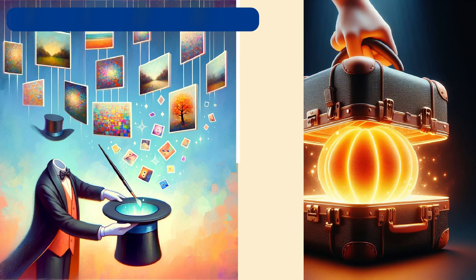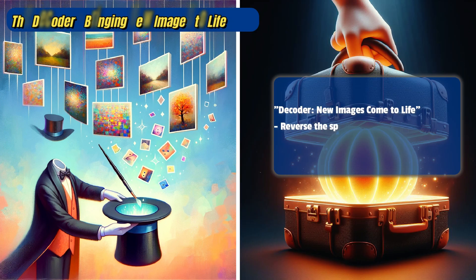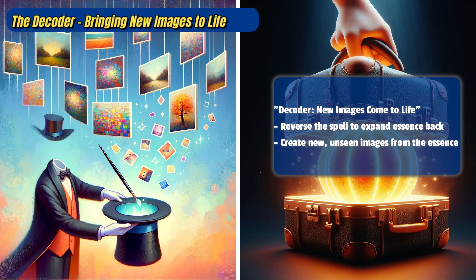Now, for the really exciting part. Our VAE magician takes this compact essence and starts to reverse the spell, expanding it back into images. But not just any images — the VAE creates new ones that have never been seen before, using the magical essence as a guide. It's like our magician is not just unpacking the suitcase, but creating an entirely new vacation destination from it.